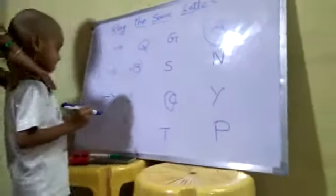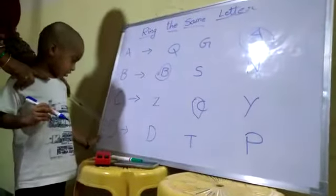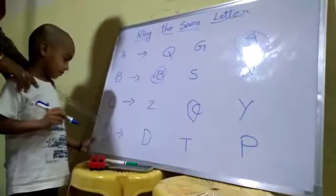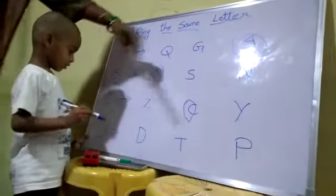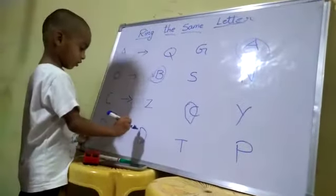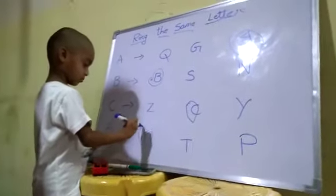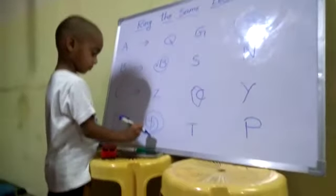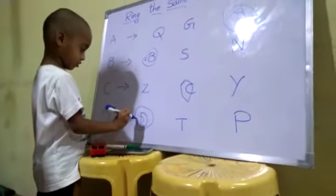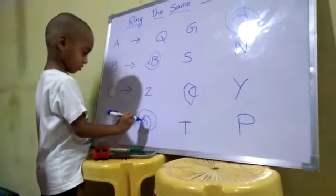What is this letter? D. Very good. Where is the D? In the... Good. This is the D. D. Very good.